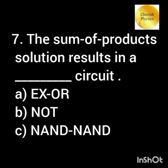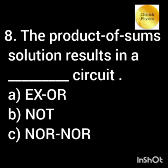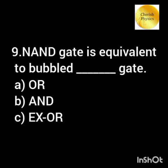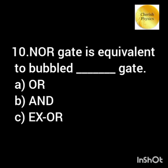The priority for greatest simplification in a Karnaugh map is to encircle the — dash. The sum of products solution results in a dash circuit. The product of sum solution results in a dash circuit. NAND gate is equivalent to a bubbled dash gate.